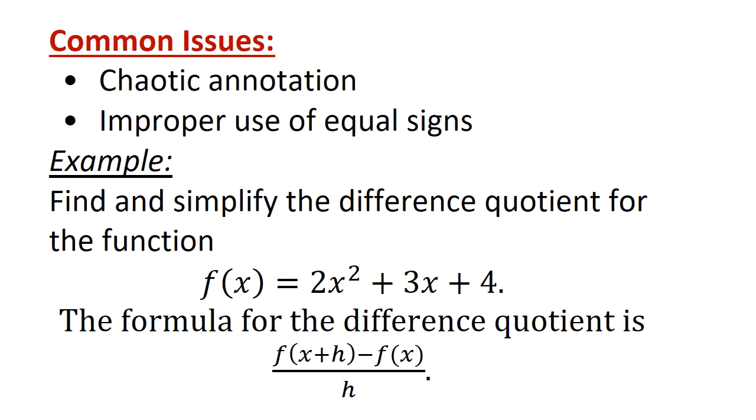So we're going to begin with an example. Find and simplify the difference quotient for the function f(x) equals 2x squared plus 3x plus 4. And remember the formula is f(x+h) minus f(x) divided by h. Now I'm not going to teach you how to work this problem. I'm going to talk about how to write this problem down correctly.